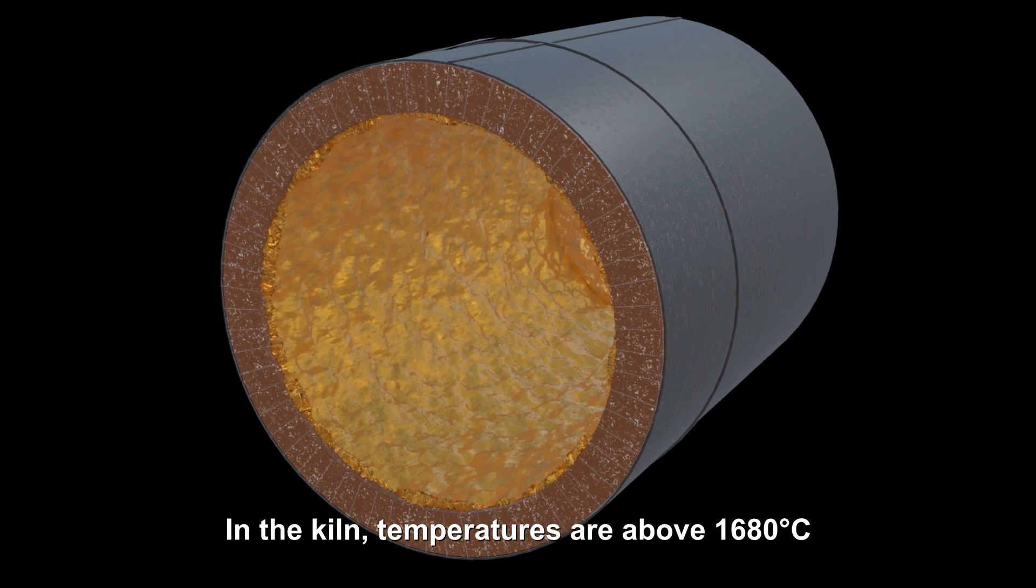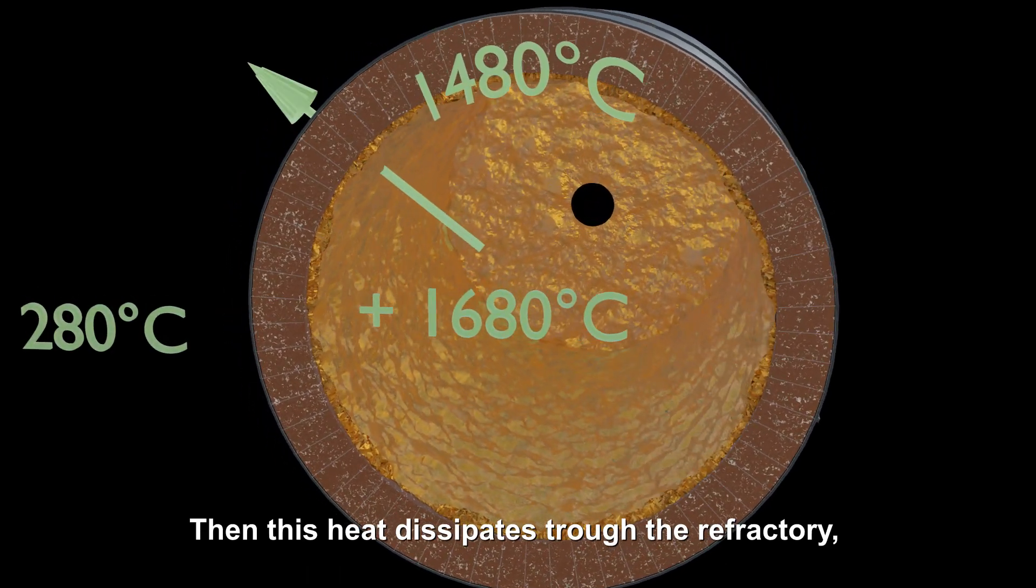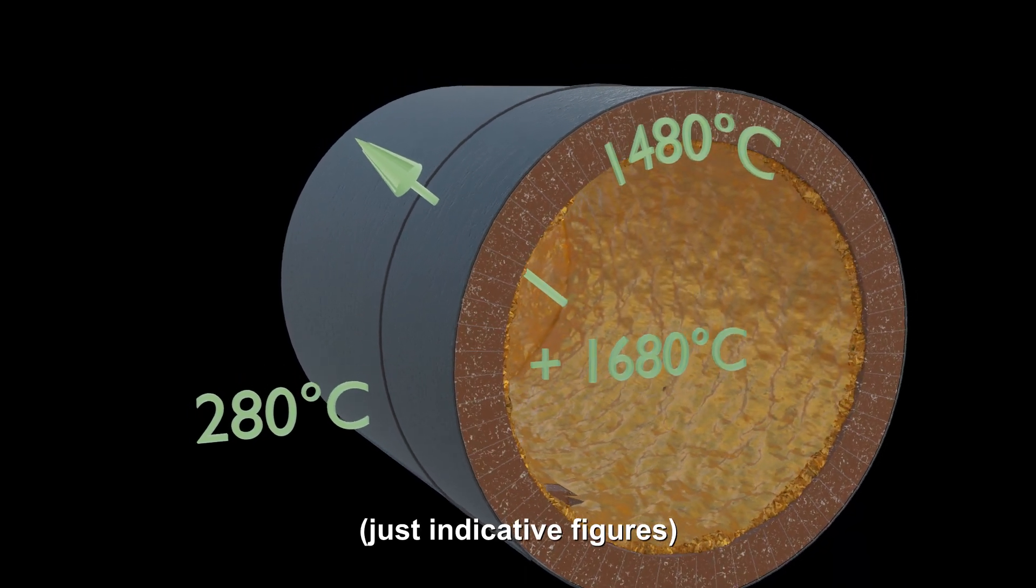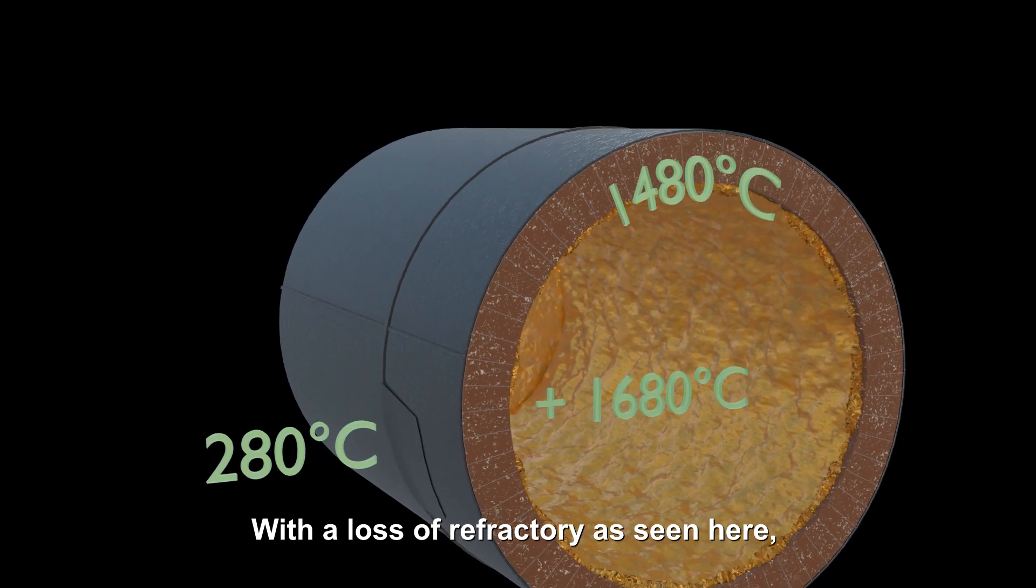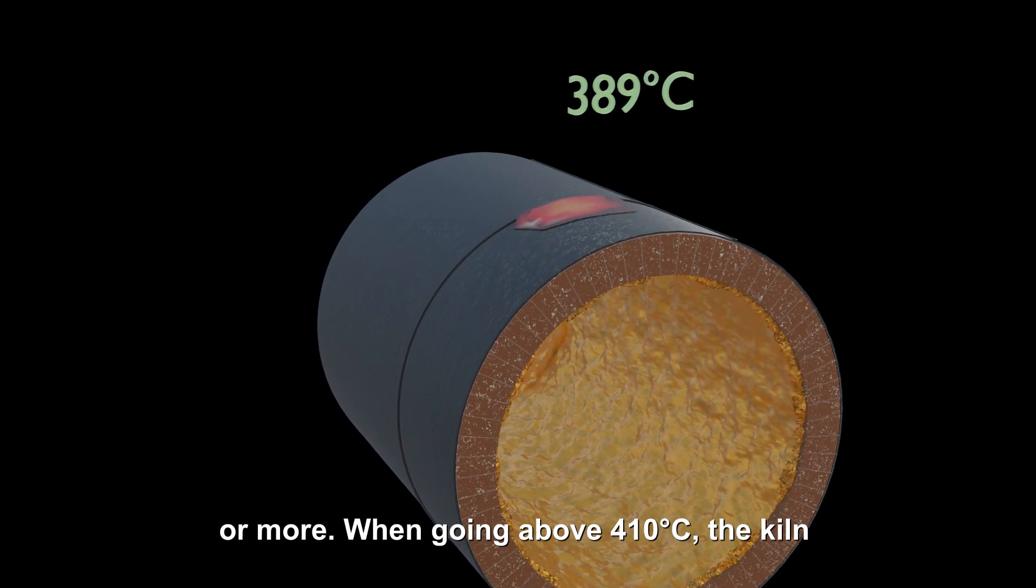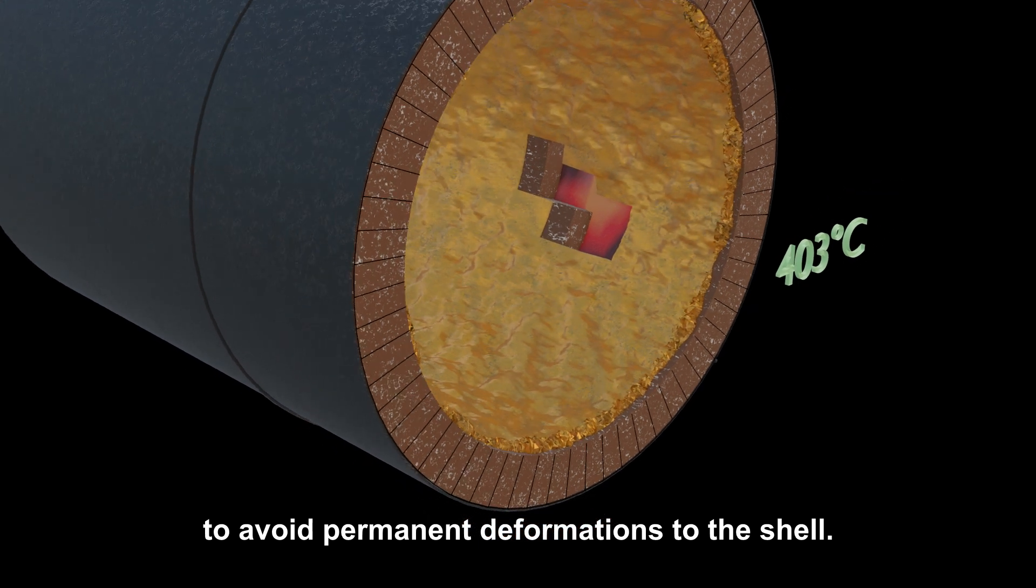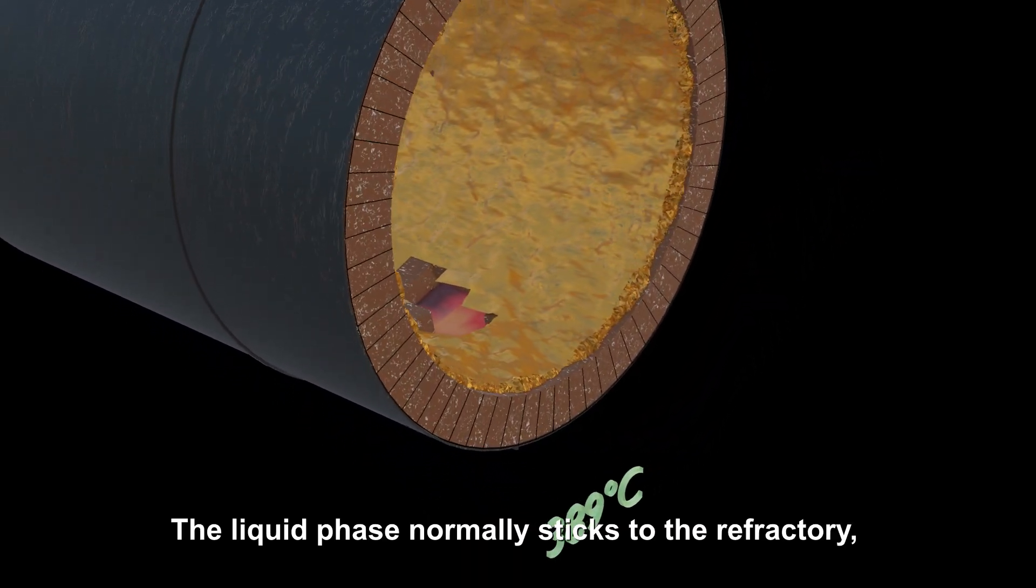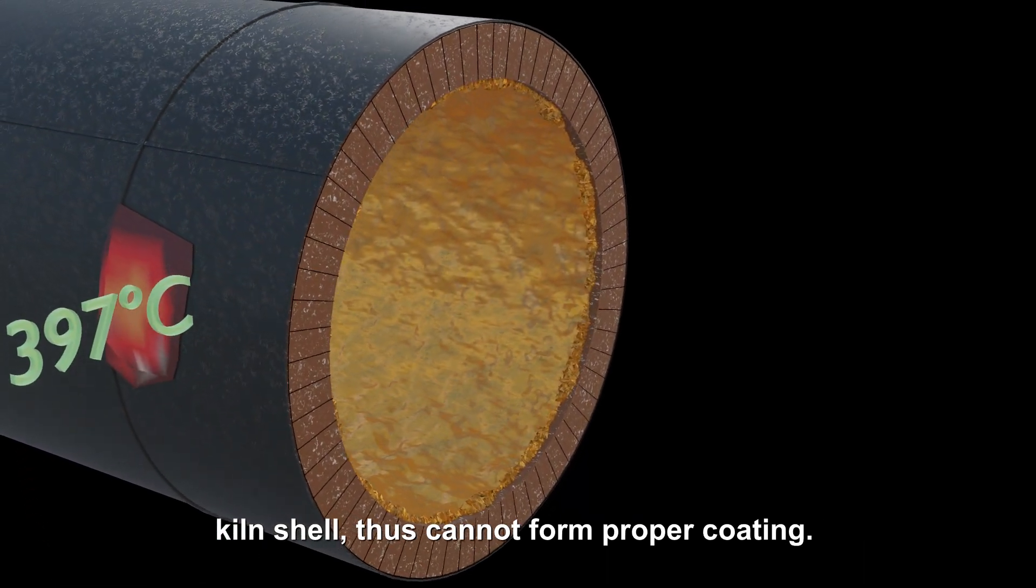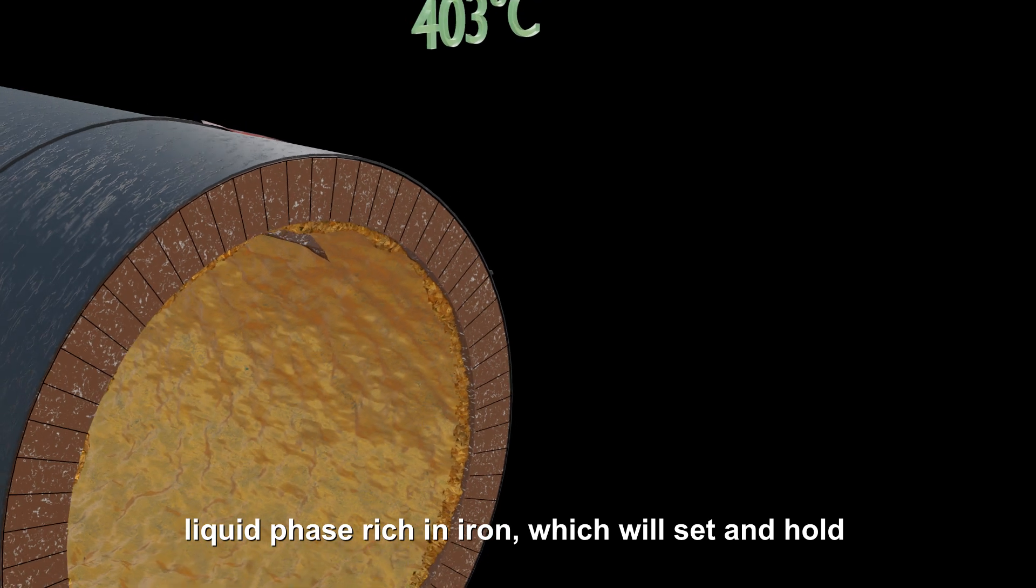In the kiln, temperatures are above 1680 Celsius in the coating, goes down to around 1480 Celsius, then this heat dissipates through the refractory, the shell, with readings of around 280 Celsius. With a loss of refractory as seen here, the shell temperature will reach 380, 400 degrees Celsius or more. When going above 410 degrees Celsius, the kiln must be stopped immediately to avoid permanent deformations to the shell. The liquid phase normally sticks to the refractory, forming our coating, but does not combine with the kiln shell, thus cannot form proper coating. The idea of the procedure is to create an excess of liquid phase rich in iron which will set and hold onto the shell.